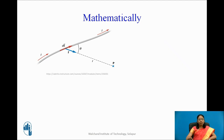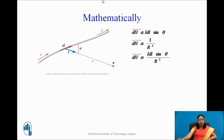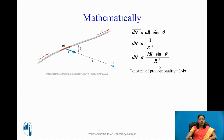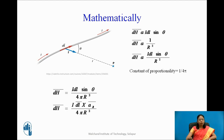Mathematically, dH is directly proportional to the product of current I, the differential length, and sine of the angle, and inversely proportional to the square of the distance R. The constant of proportionality is 1 upon 4π. So dH bar equals I dL sin θ upon 4π R².